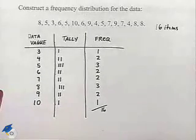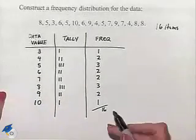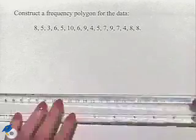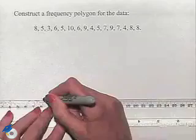So we notice that our data values go from 3 to 10, and our frequencies, the highest frequency we have is a 3. So let's start off by, along our horizontal axis, putting down our data values.